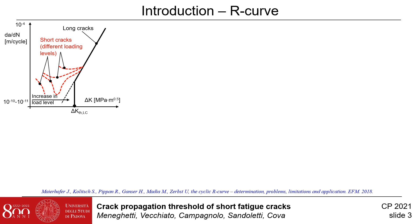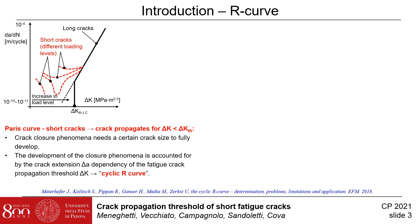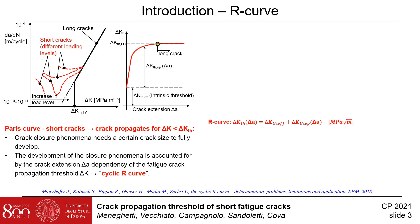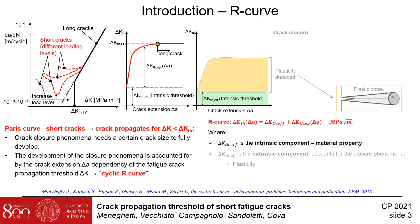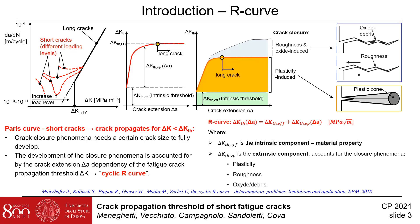When the long crack Paris curve is applied to short cracks, a pattern such as shown in the figure emerges. Different curves are obtained as a function of load level, but in any case crack propagation takes place well below the long crack threshold delta KTH. This can be explained since the crack closure phenomenon needs a certain crack size to fully develop. This is accounted for by the crack extension delta A dependency of the R-curve crack propagation threshold delta K. The threshold delta KTH for short cracks can be written as the sum of the intrinsic component, which is a material property, and the extrinsic component, which accounts for closure phenomena due to plasticity, roughness and oxide or debris, up to the threshold of a long crack configuration where closure mechanisms reach saturation.